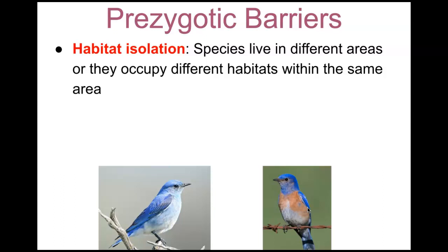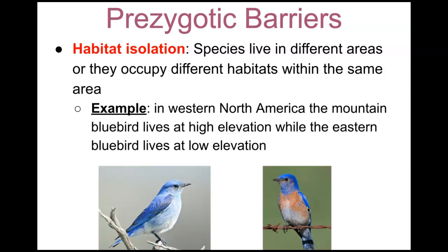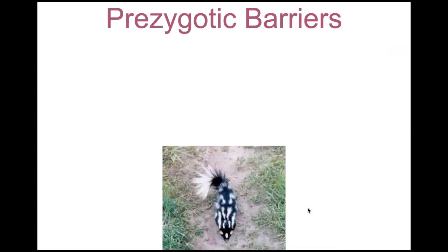Pre-zygotic barrier number one: habitat isolation. Species live in different areas, or they occupy different habitats within the same area. An example in western North America: the mountain bluebird lives at high elevations while the eastern bluebird lives at a lower elevation. So we have species occupying different habitats — one at higher elevation, the other at lower elevation within the same area.